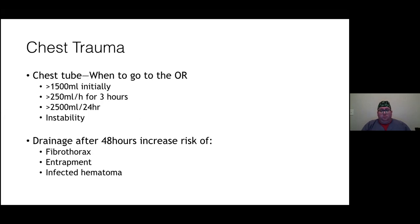Moving on to the chest: chest tube indications for going to the OR include 1.5 liters out initially, 250 cc/hour over three hours, 2.5 liters over 24 hours, or the patient being persistently hypotensive with no other injuries to explain it. If there is high-volume drainage persisting after 48 hours, there is increased risk for fibrothorax, lung entrapment, and infected hematoma.